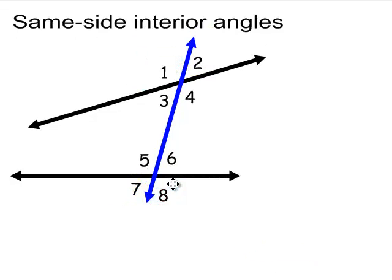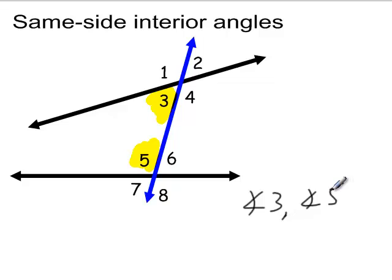Same-side interiors are two interior angles on the same side of the transversal. Angles 3 and 5 are one pair, and angles 4 and 6 are the other pair. Some textbooks refer to them as consecutive interior angles.